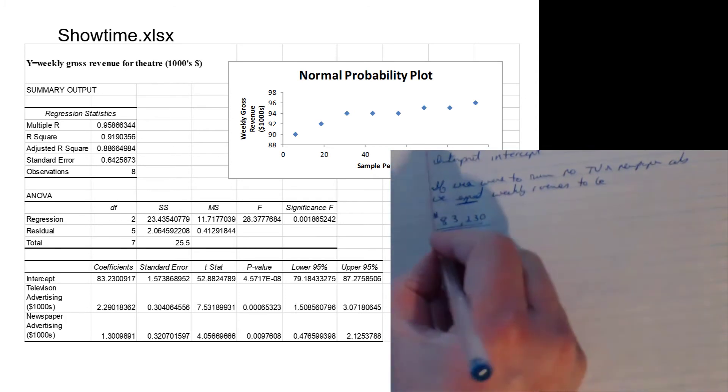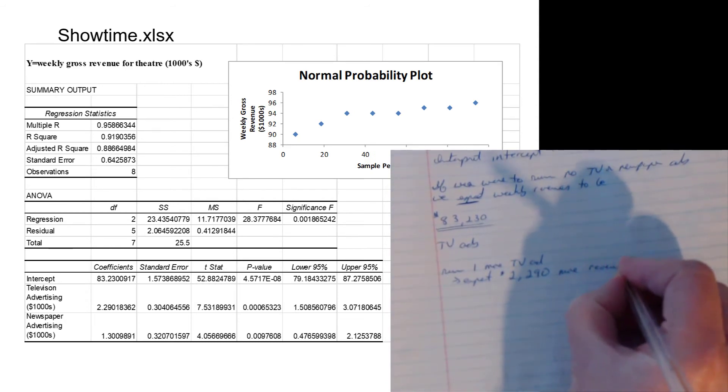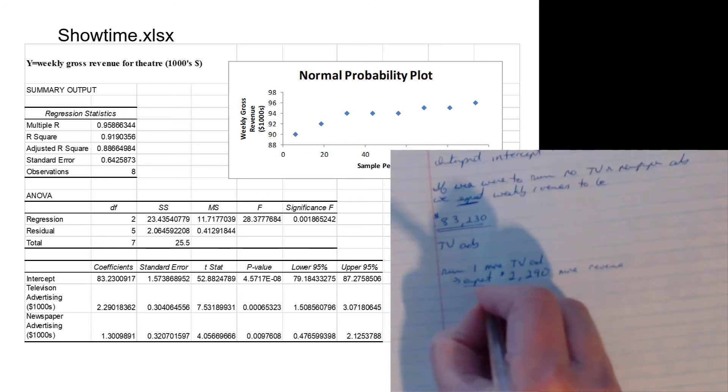Now what happens if we were to run one more TV ad? We run one more TV ad, and that's just another way of saying that TV goes up by one unit. Then we would expect two thousand two hundred and ninety dollars more revenue. That's just the value of the coefficient.